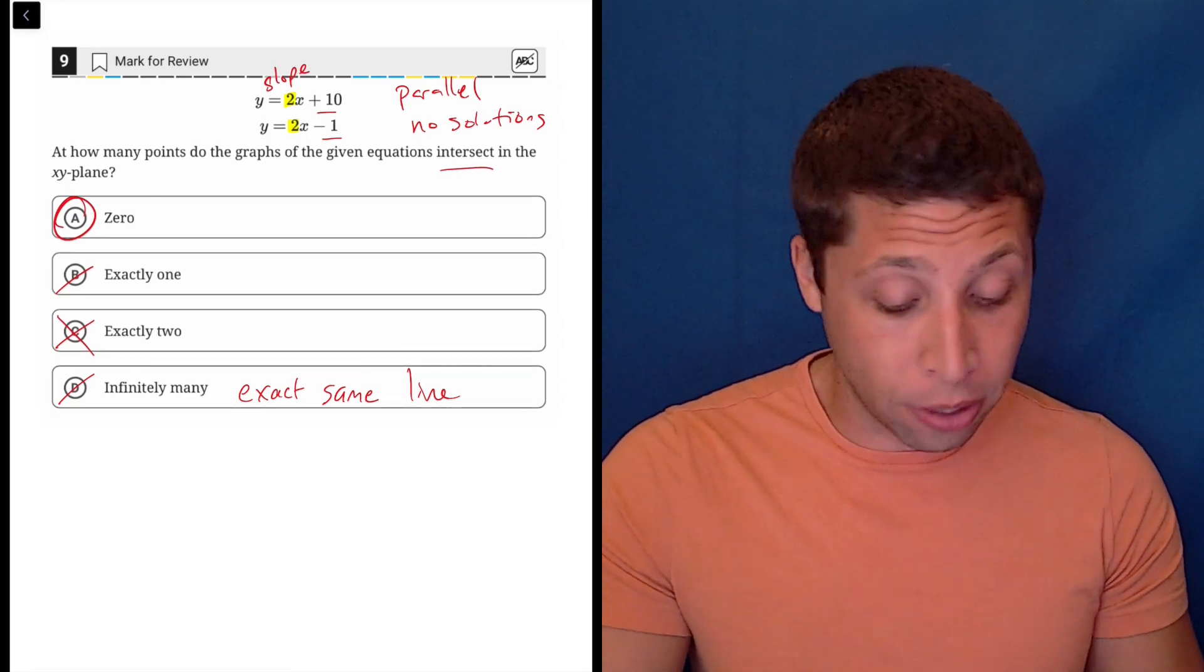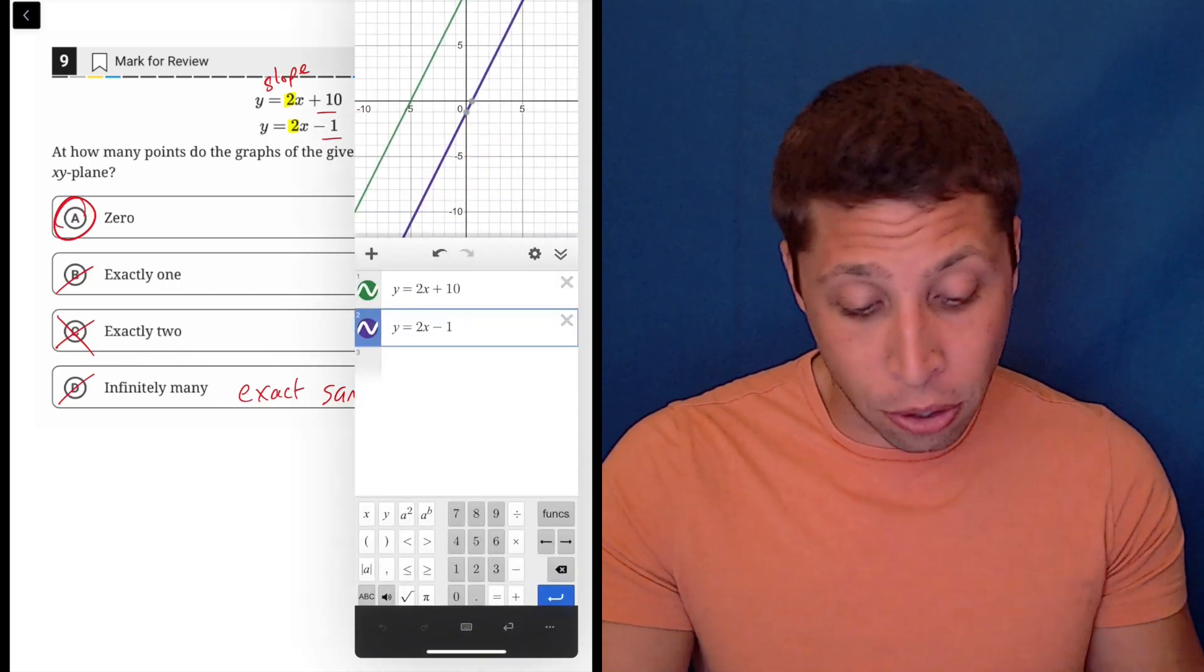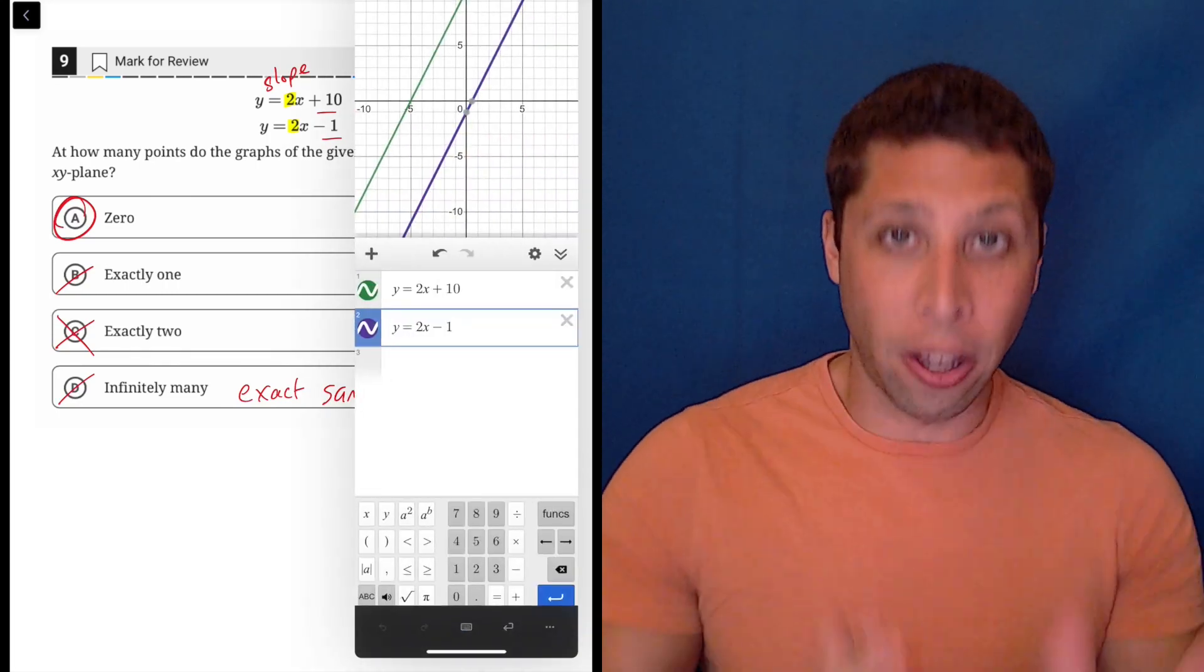If you were unsure about this, it's very easy to graph. Just graph these two things and we can kind of see it, right? Here's the two, here are the two, and you can see they're parallel. They're moving in the same direction.